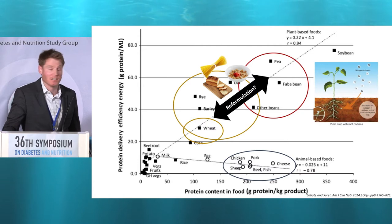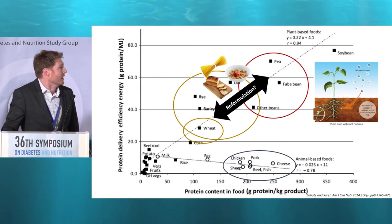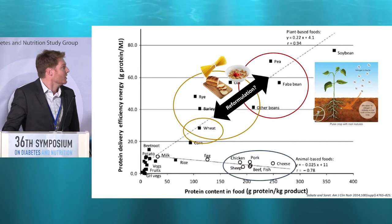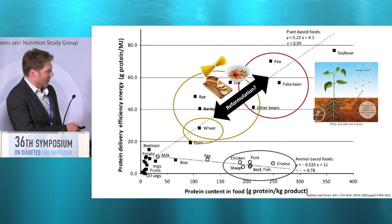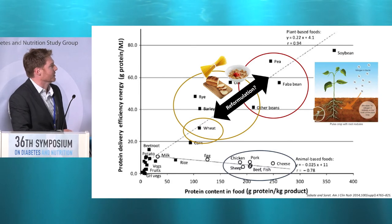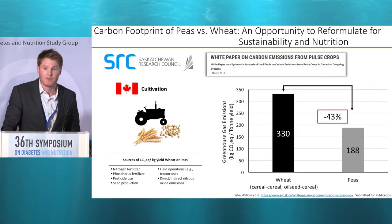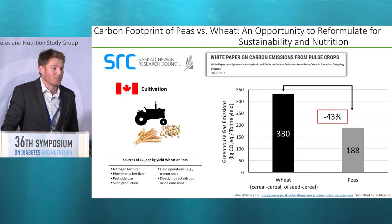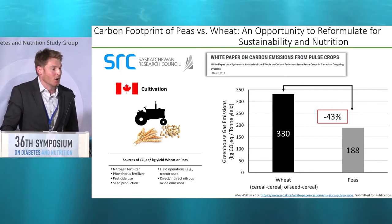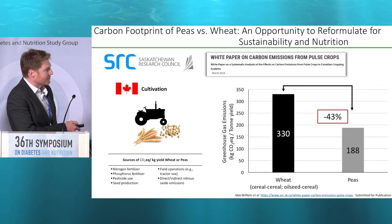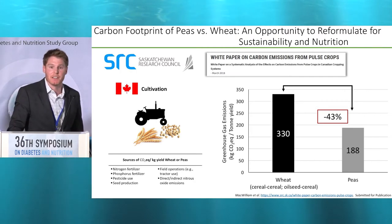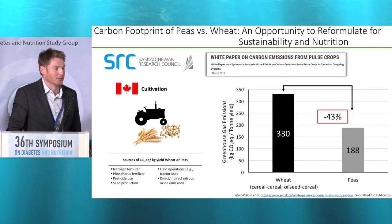Things like pasta, cereal, and bread are typically dietary staples around the world, with wheat being the primary cereal grain included in these foods. To give you an example, this is data from Canadian cropping systems for wheat and peas. In the worst case scenario for wheat — where you have a monoculture system or oil seeds preceding cereals — compared to peas, peas produce 43% less greenhouse gas emissions within a cereal-based cropping system.